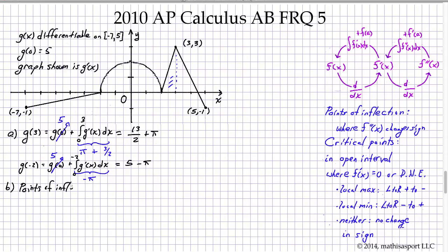Namely, points of inflection occur where g double prime of x changes sign, which in this case is a slope changing sign. So, all we have to do is determine where the slope changes sign.